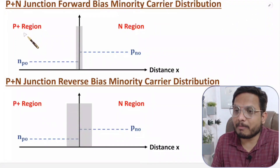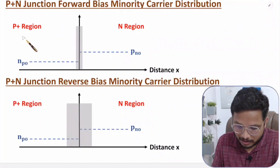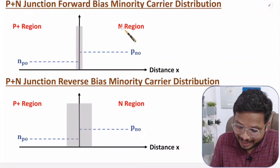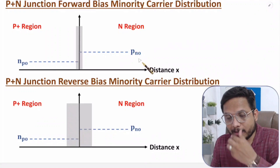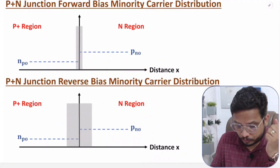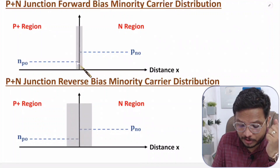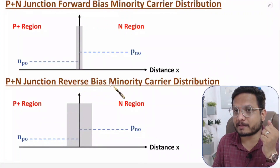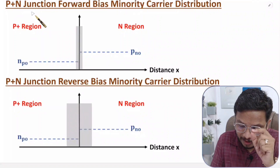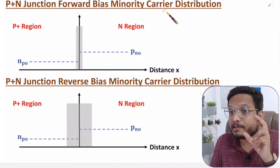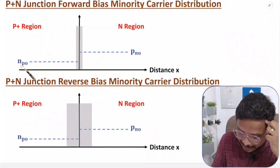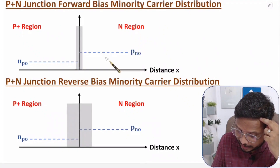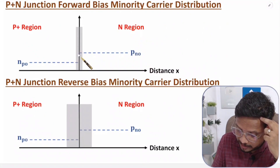In the P-plus region, minority carriers are electrons, denoted NPO. In the N region, minority carriers are holes, denoted PNO. Under zero bias (equilibrium), P-plus has lower minority carrier concentration (electrons), while the N region has higher minority carrier concentration (holes).